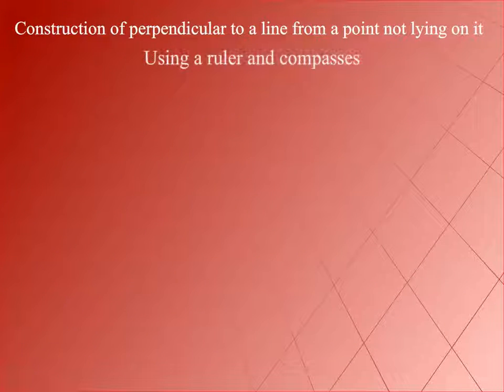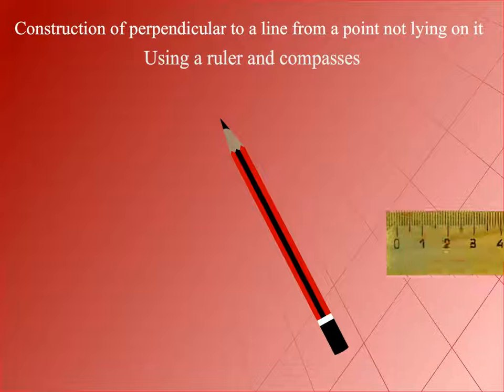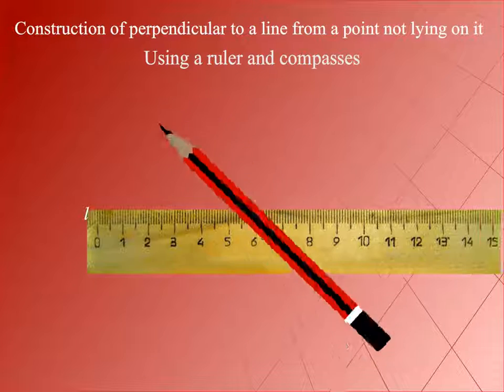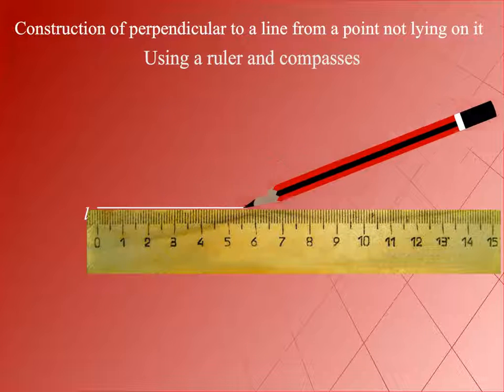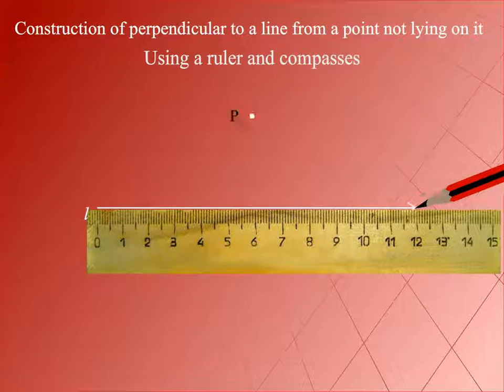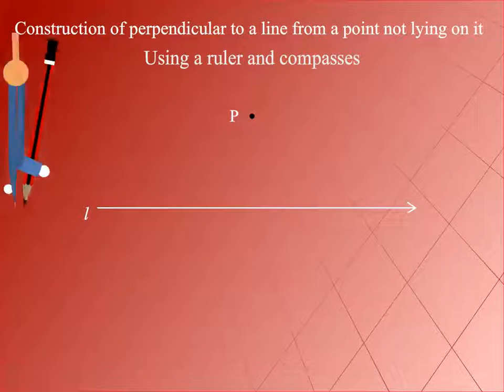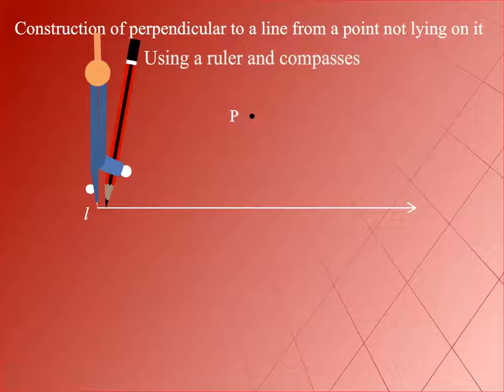Using a ruler and compasses, let L be a line and P be a point outside the line L.